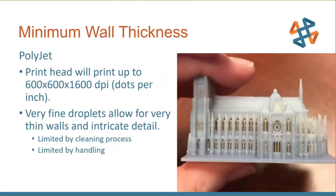For minimum wall thickness on PolyJet, with 600 by 600 DPI and 1600 DPI in the Z direction, you get very fine droplets. But you're limited by the cleaning process. If you use a water jet to blow out supports, it may blow out the part. However, soluble support material lets you soak supports out, and then use a toothbrush to clean — giving you a very fine, detailed part.